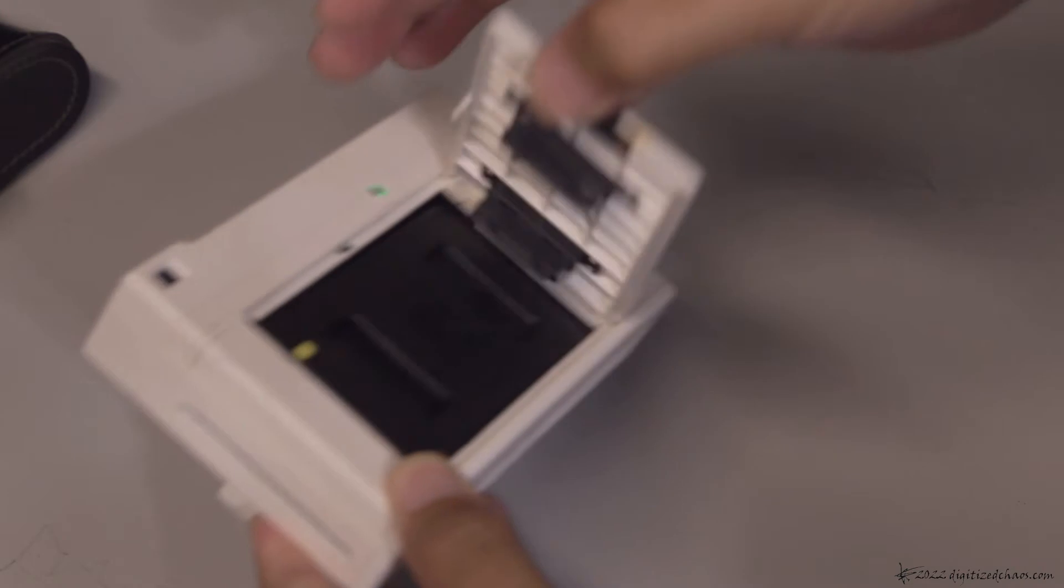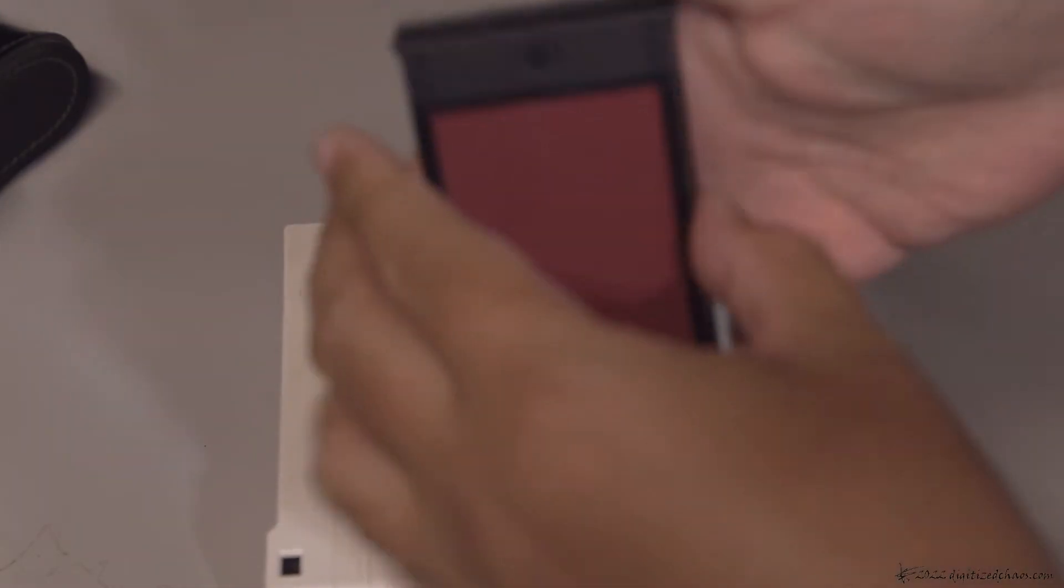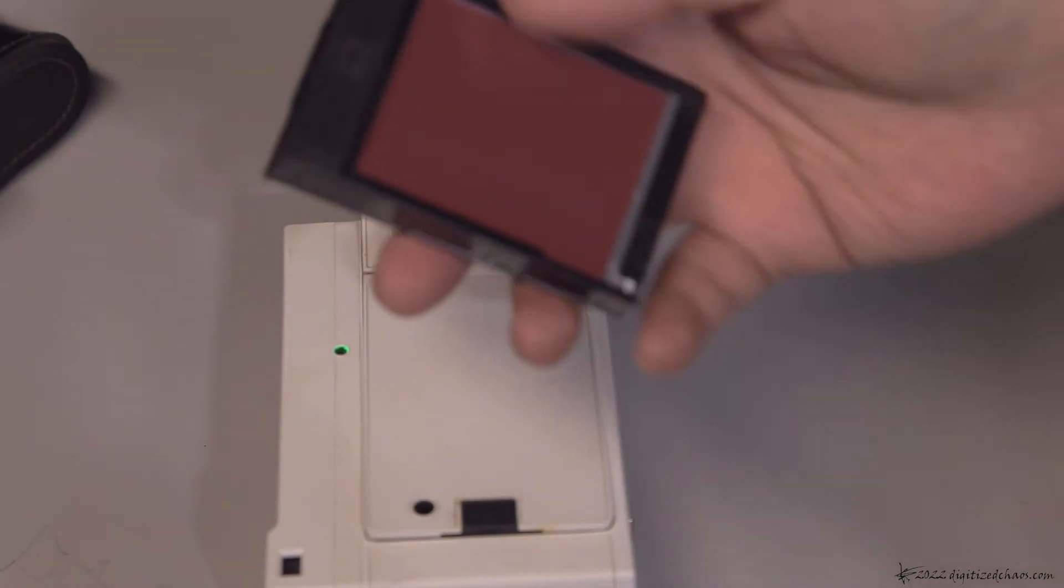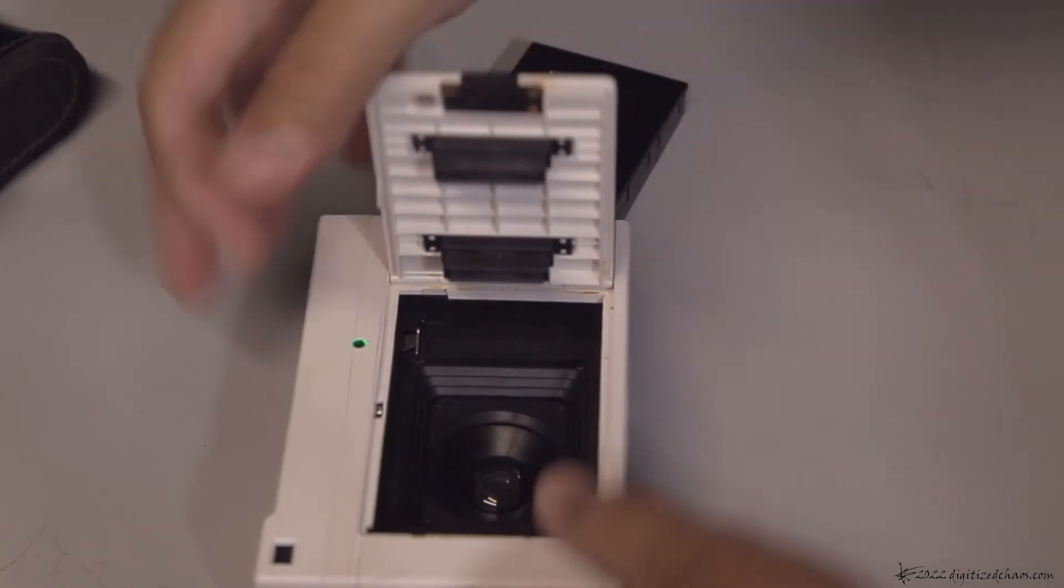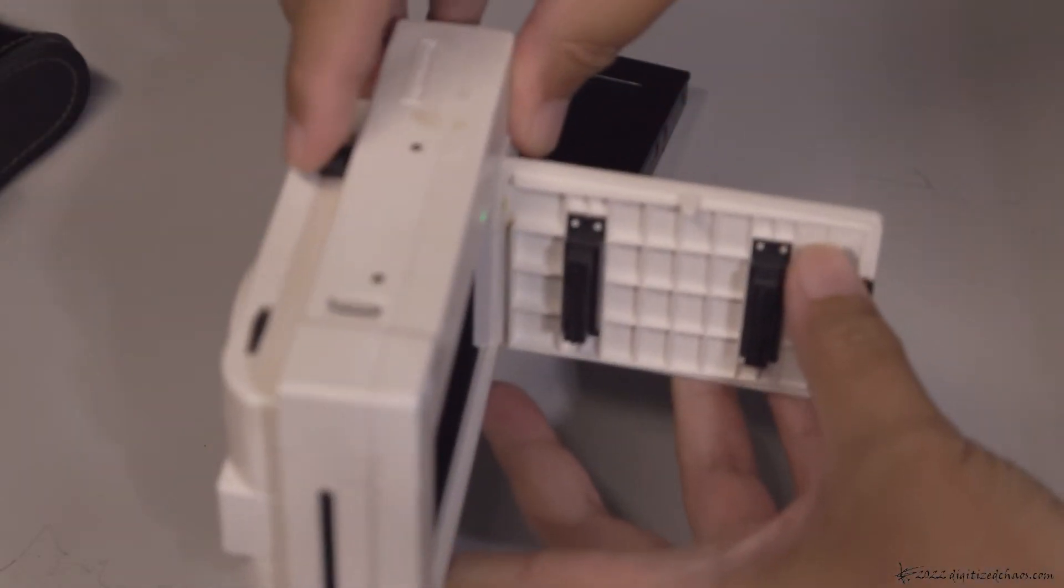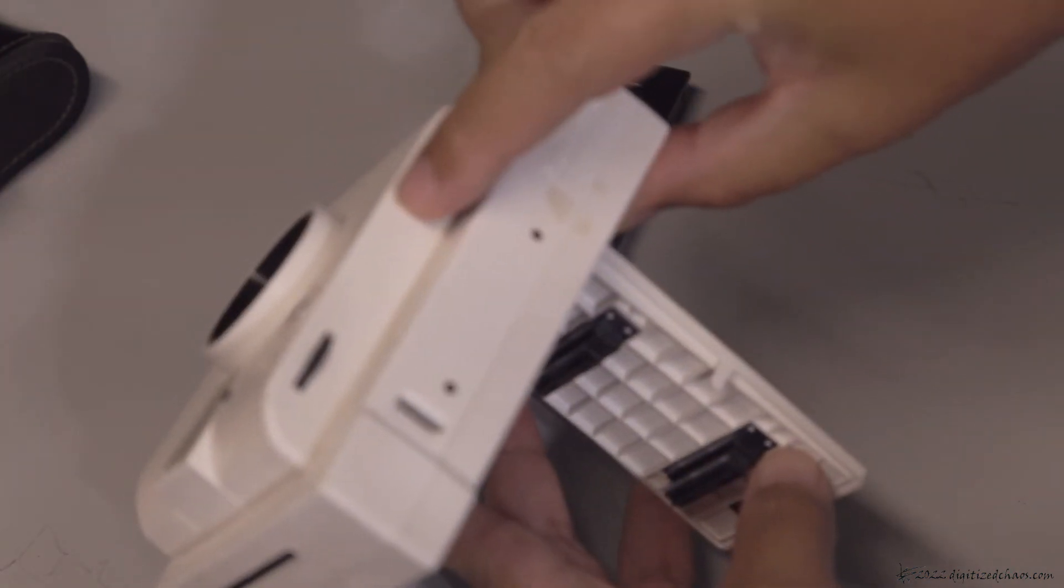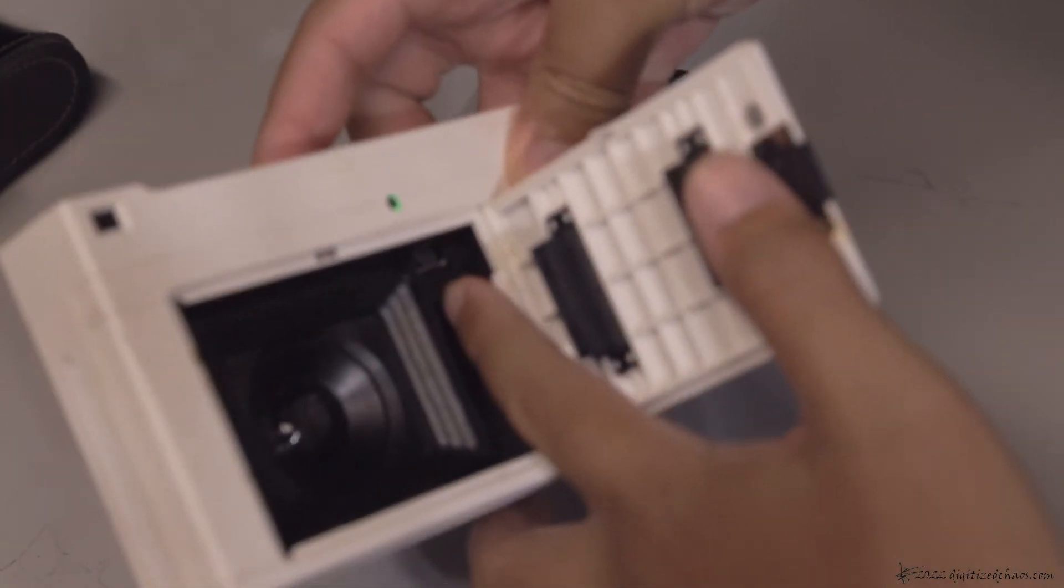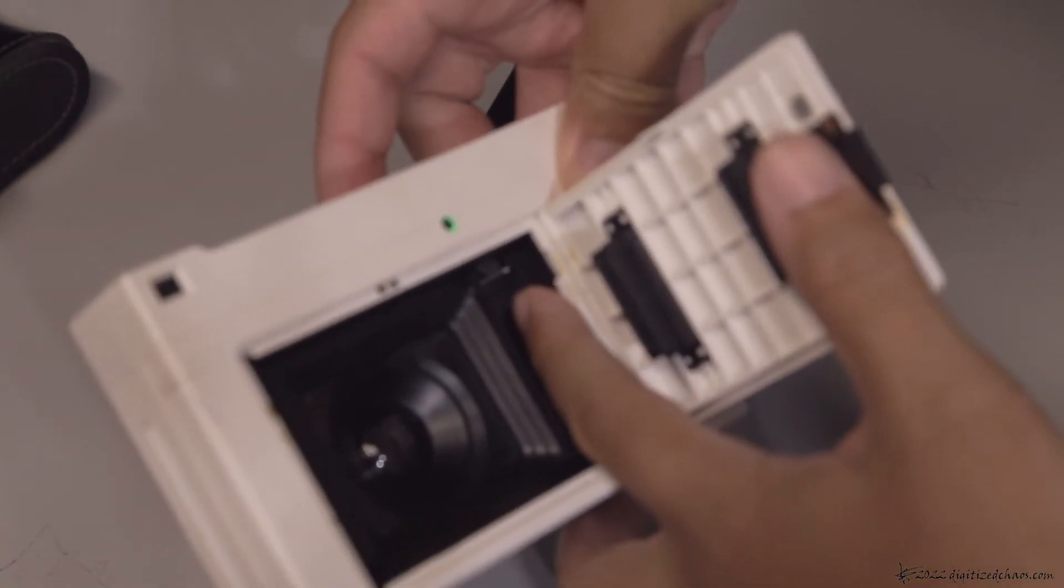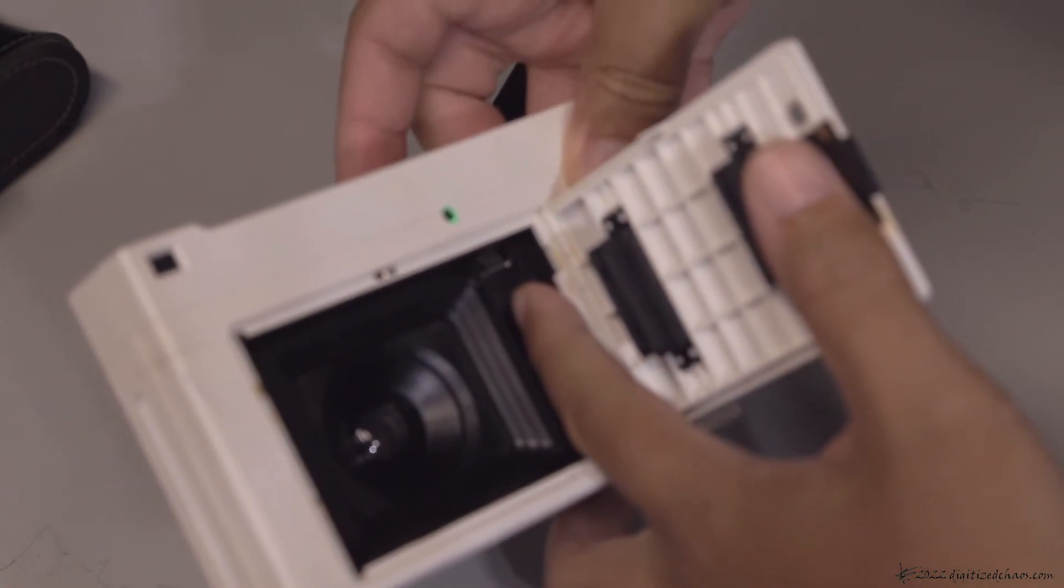So this is a used up Instax mini cartridge. See here if I trip the lever, this should probably move but it's not moving.